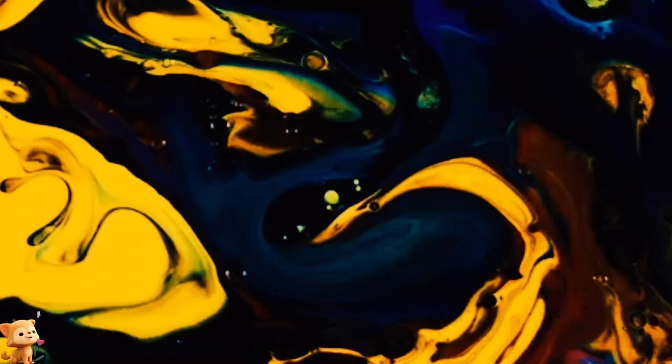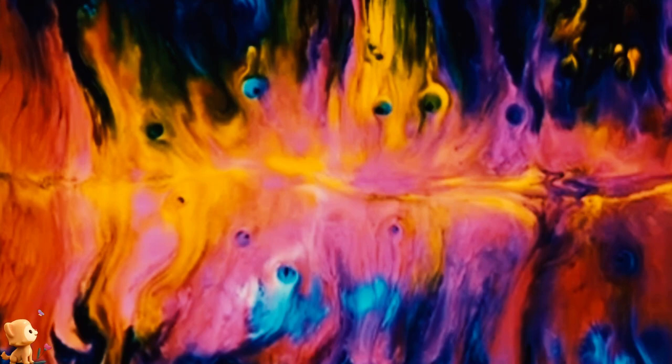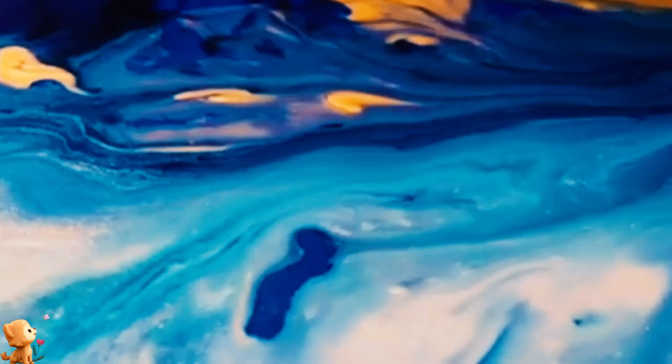The interplay of colors in fluid painting can also hint at the artist's emotional state. A canvas dominated by warm colors might suggest an artist wrestling with strong emotions or undergoing a period of intense activity. On the other hand, a canvas awash with cool colors might indicate an artist seeking serenity or grappling with feelings of isolation or melancholy.